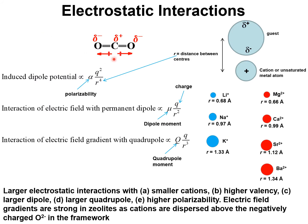Let us examine the electrostatic interactions between a gas molecule and the extra framework cation. That can be either lithium, sodium, potassium, magnesium, calcium, strontium, or barium. Also indicated here is the size of the cation, the radius of the cation in Angstrom values.